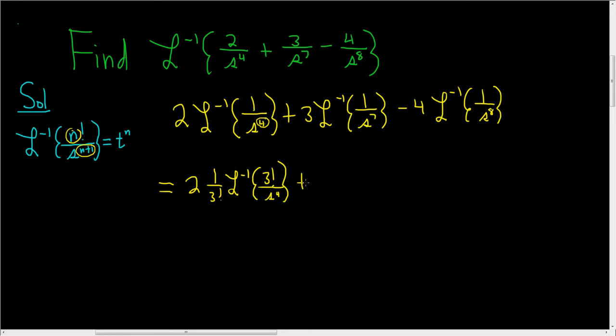Same thing here, we have plus 3, and again I'm going to leave some space here. We have the inverse Laplace. Here we have a 7, so we have to have 1 less, so 6 factorial. And then we have s to the seventh, and then we multiply by 1 over 6 factorial.